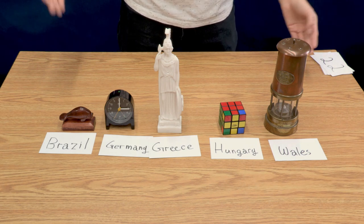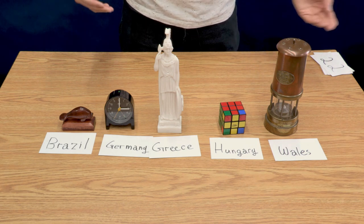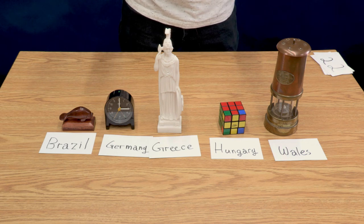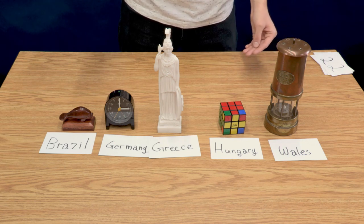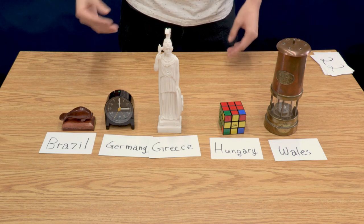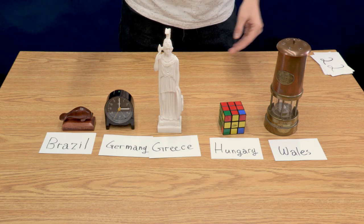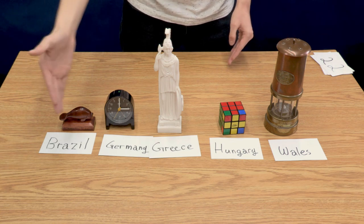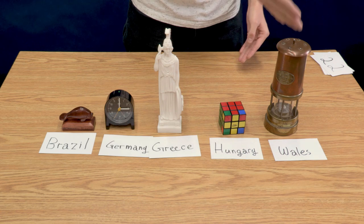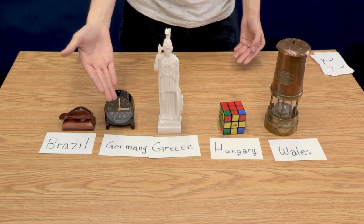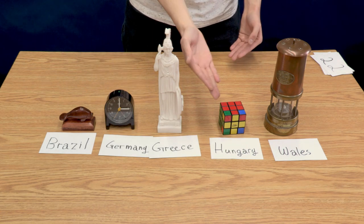So, you can see that my key function took, as input, a trinket, and output the trinket's country of origin. The country of origin is just a word. I already know how to sort words. Thus, the trinkets are sorted in ascending order by their country of origin: Brazil, Germany, Greece, Hungary, and Wales.